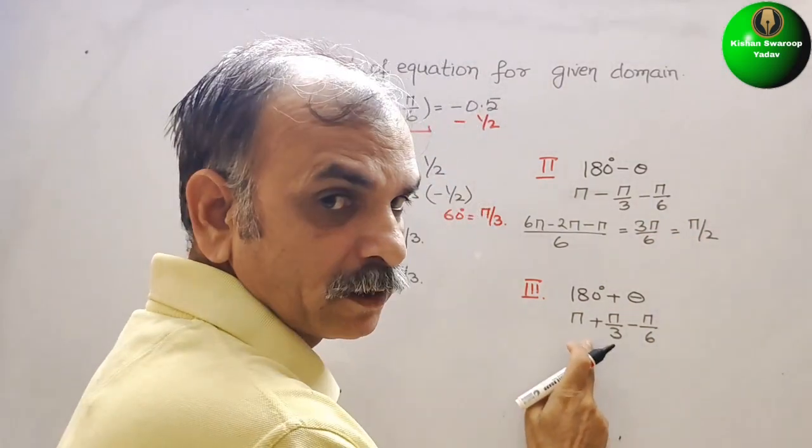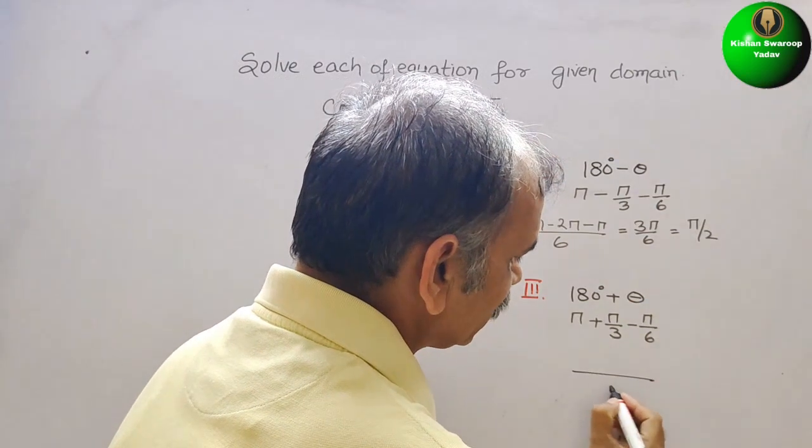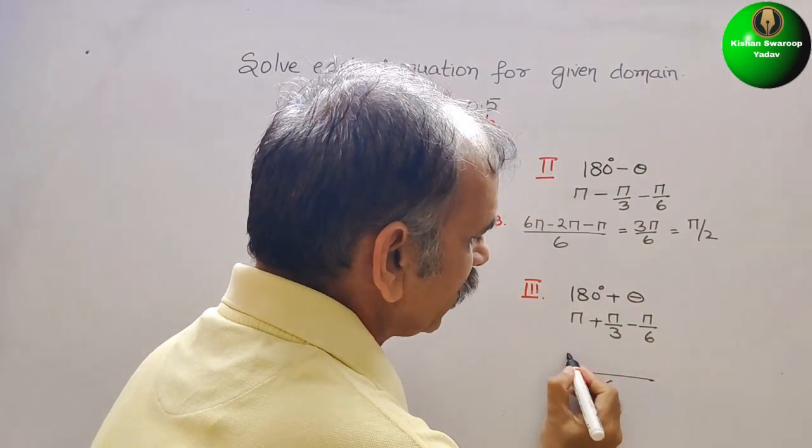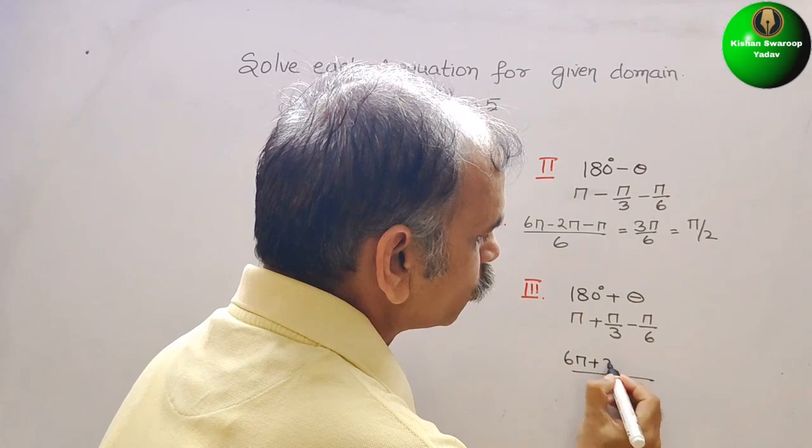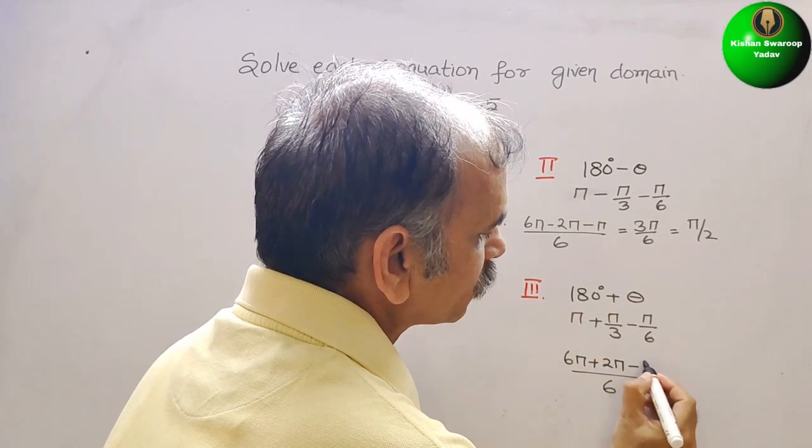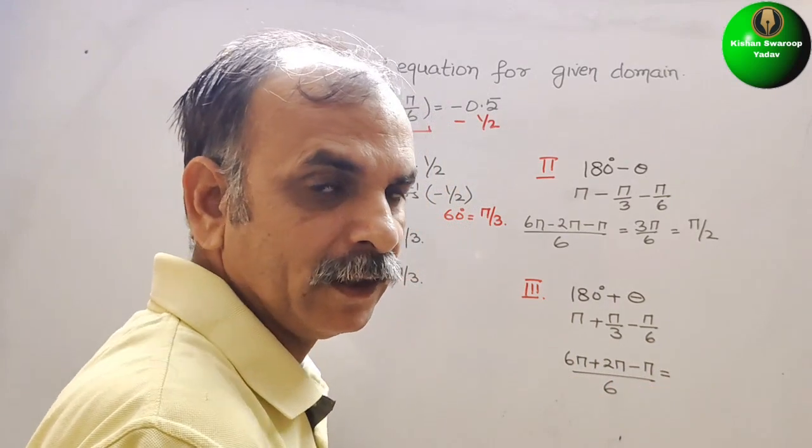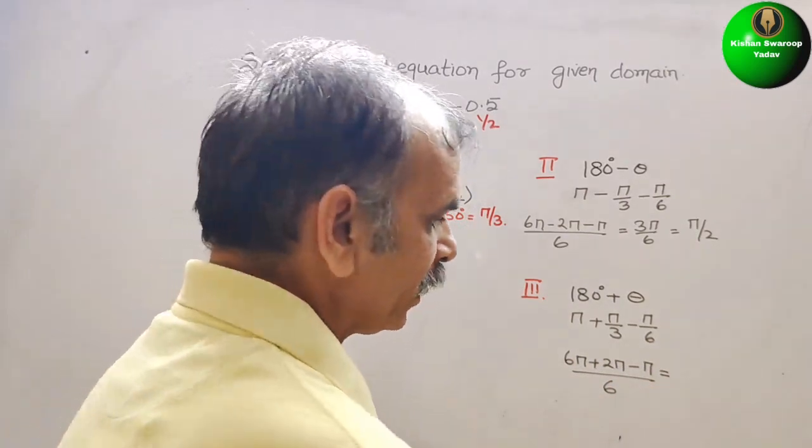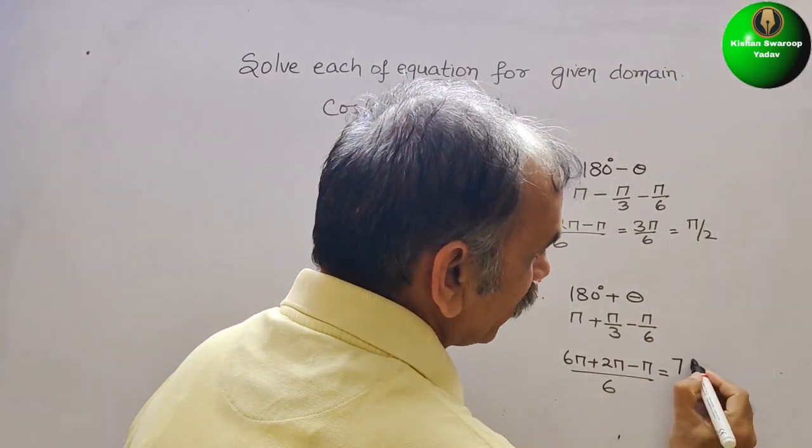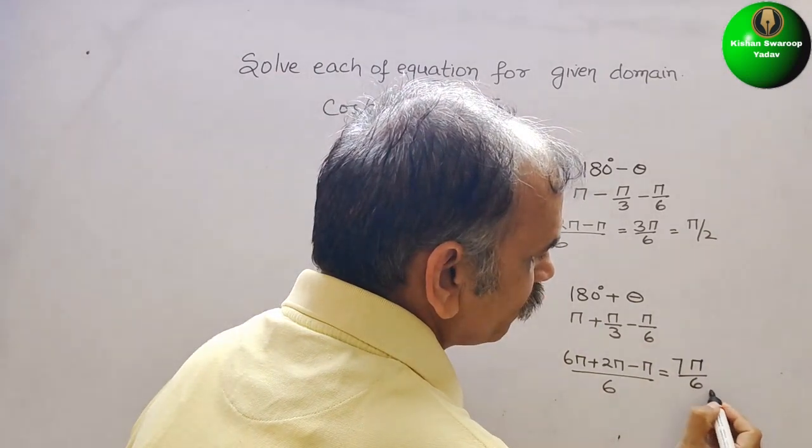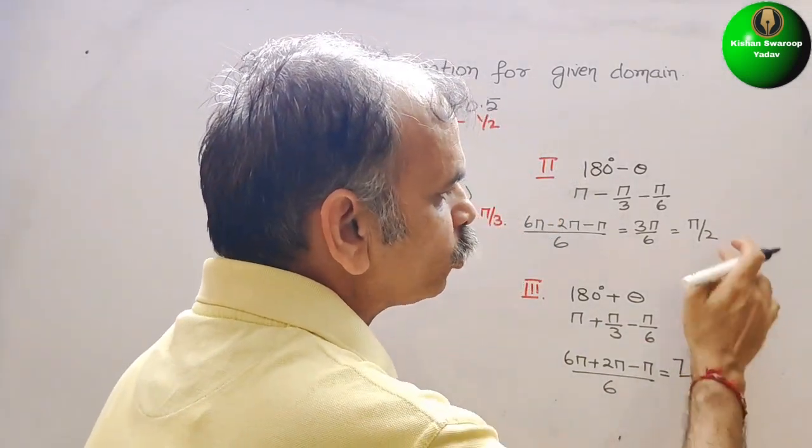And solve this. Here 6 is the LCM. So here you will get 6π + 2π - π. That is equal to 6 + 2 is 8, 8 - 1 is 7π. So we will get 7π/6. So these are your two solutions.